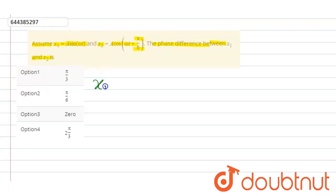So here x1 is given A sin omega t, and x2 is given A cos omega t plus pi by 6.